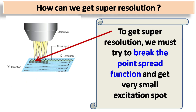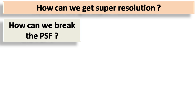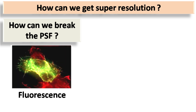To get super resolution, we must try to break the point spread function and get a very small excitation spot. The next question that arises is: how can we break the point spread function? According to the laws of physics, it is practically impossible to break the point spread function. To solve this problem, scientists used a brilliant idea.